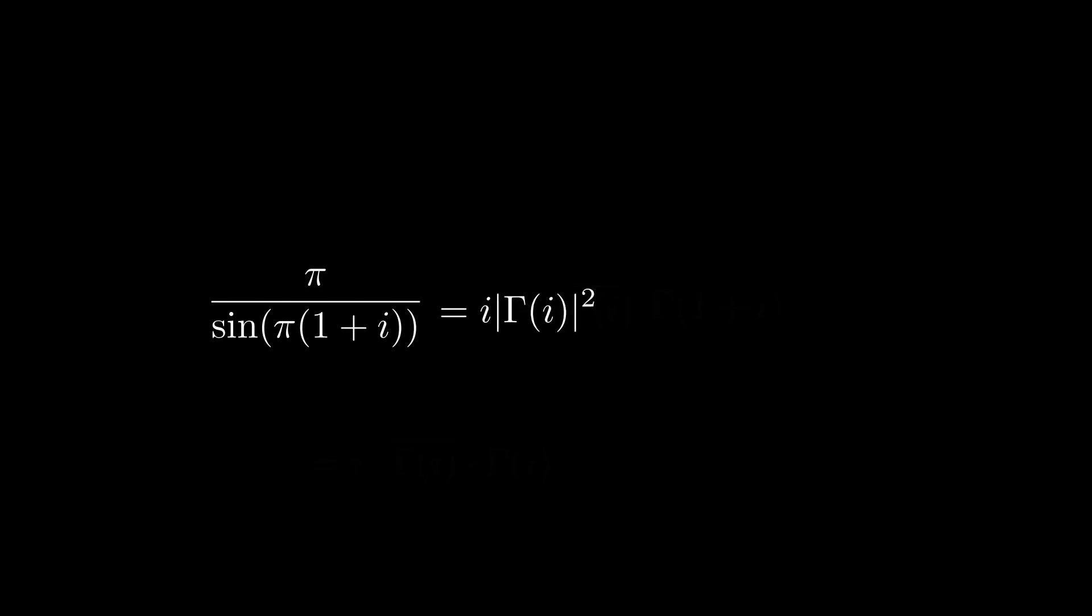Now, that's pretty cool in and of itself, but we were going for i factorial. Remembering that the absolute value of gamma i is the same as the absolute value of gamma of 1 plus i, let's make that switch because gamma of 1 plus i is i factorial. Now, all we have to do is algebraically solve for i factorial. Now, it's a little bit of a pain because it's an absolute value, but the absolute value of i factorial is still a pretty good solution. Just divide both sides by i.